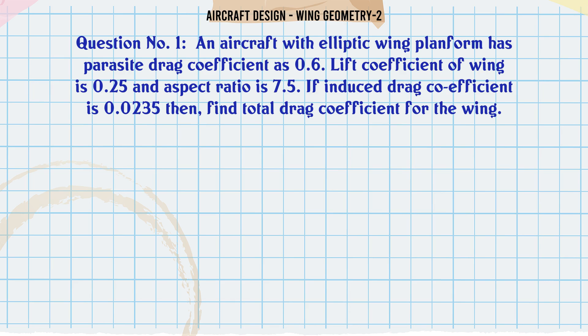An aircraft with elliptic wing platform has parasite drag coefficient as 0.6. Lift coefficient of wing is 0.25 and aspect ratio is 7.5. If induced drag coefficient is 0.0235, then find total drag coefficient for the wing.